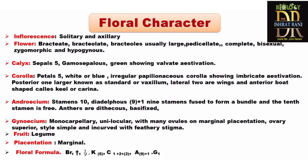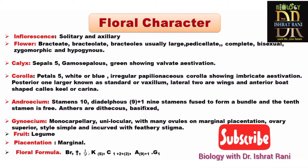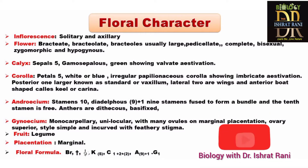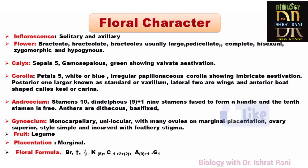There are 10 stamens with a 9+1 arrangement — nine are fused and one is free. The gynoecium is monocarpellary. The fruit is a legume, as it is a leguminous plant, and marginal placentation is present.